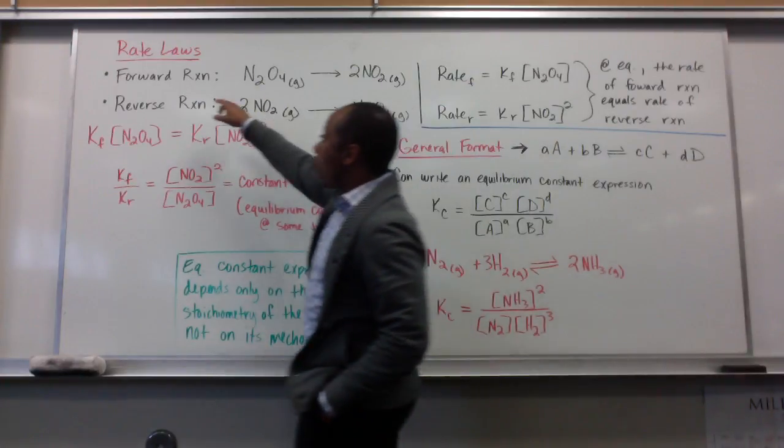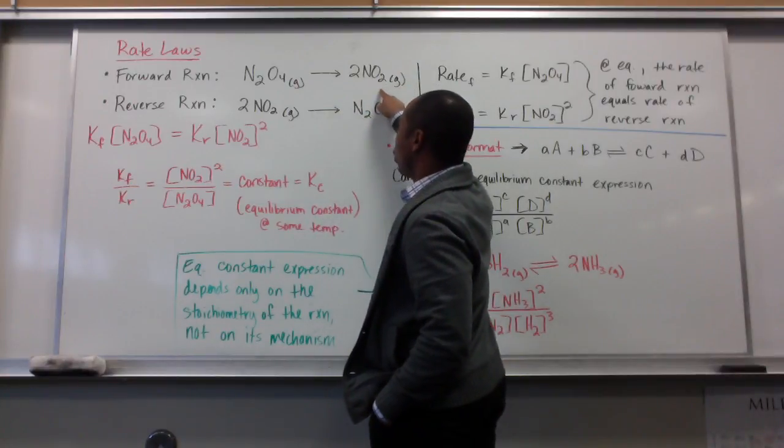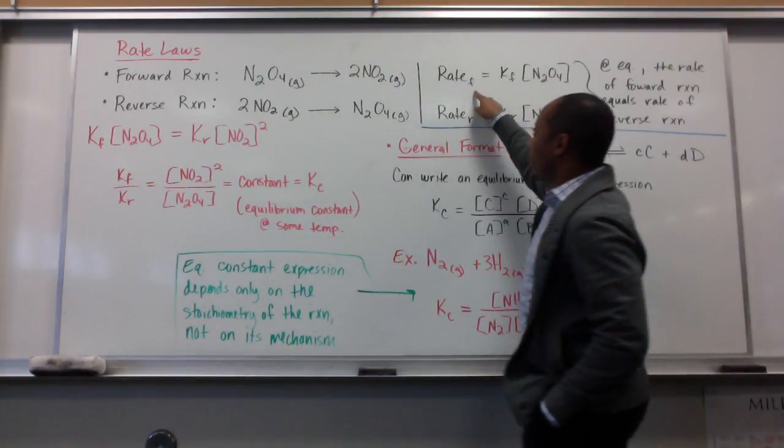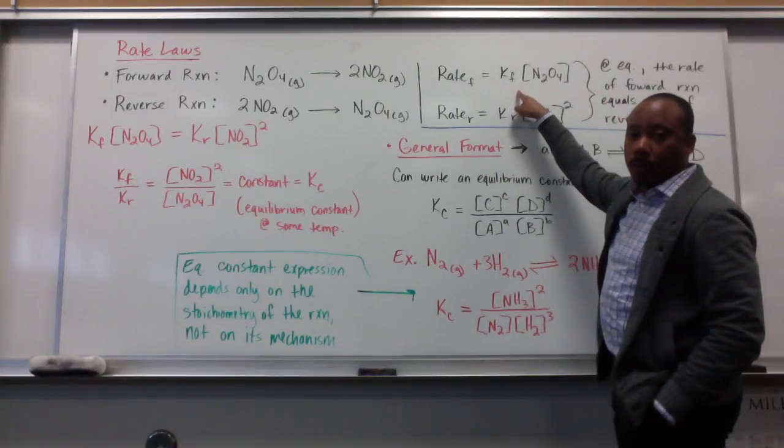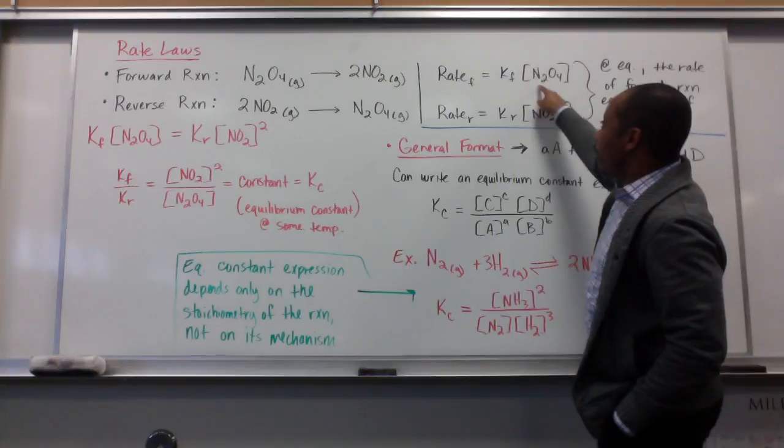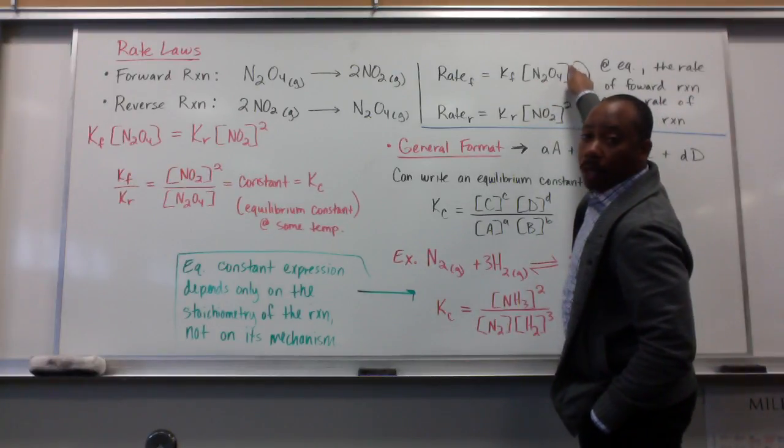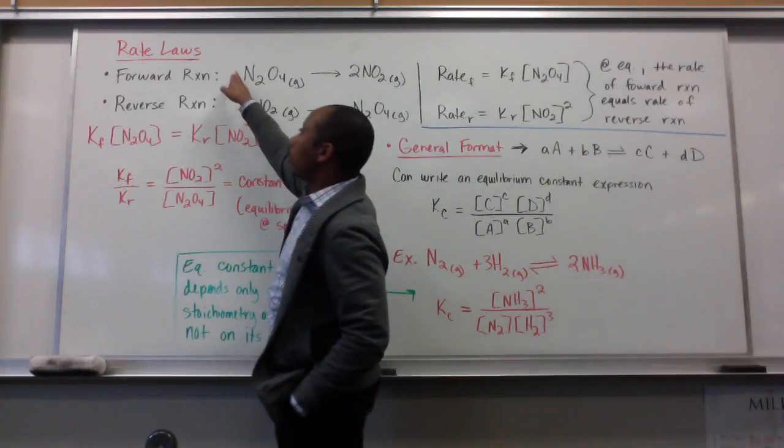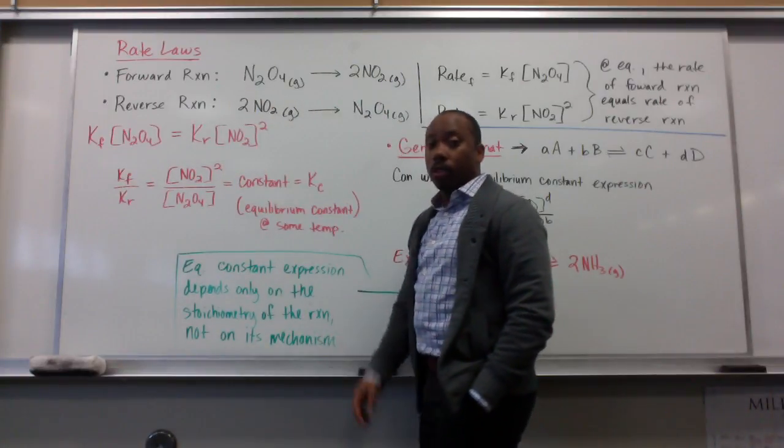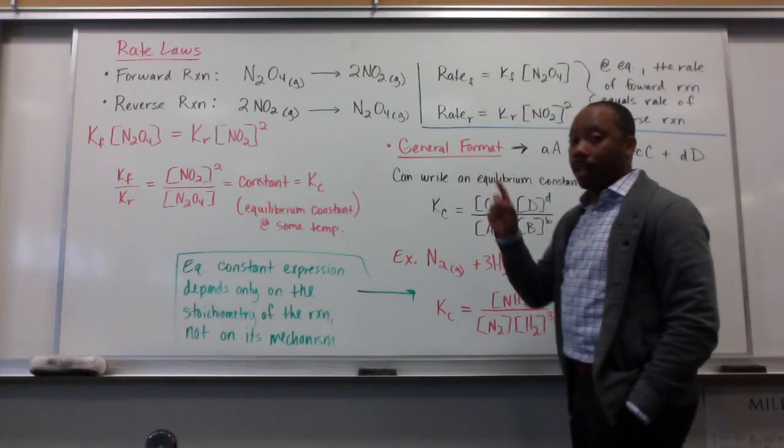Or we're not going to assign reaction orders, rather. So, my forward reaction, I have N2O4, goes to 2 moles of NO2. So, my rate of the forward reaction is K sub F, my equilibrium constant in the forward direction, times the concentration of N2O4. My exponent here is going to be a 1, because I have 1 mole of my reactant. So, again, my rate law only depends on my reactant involved.